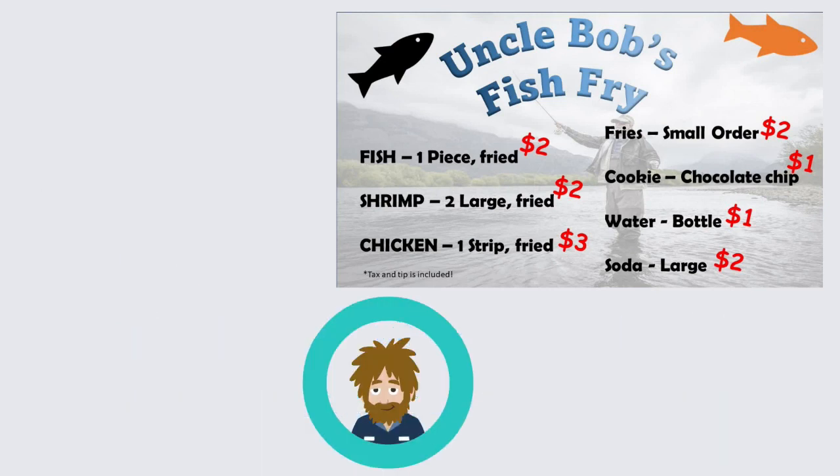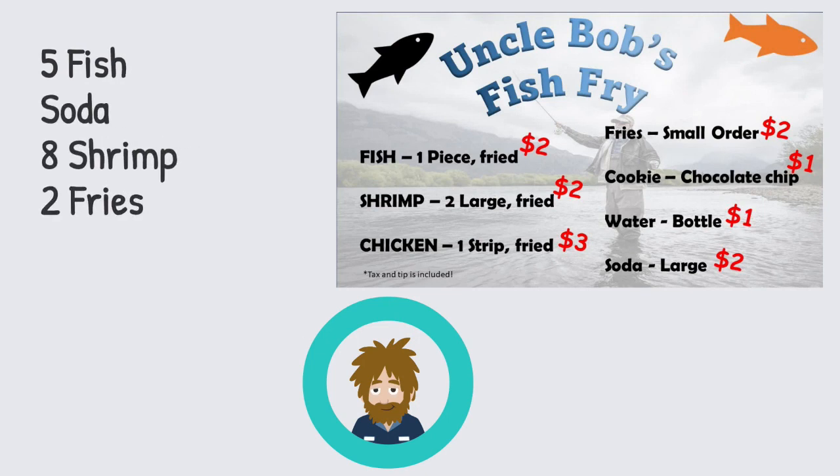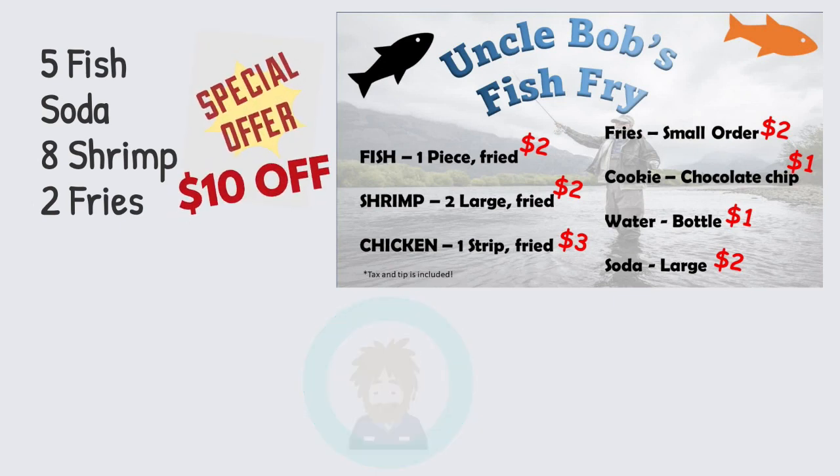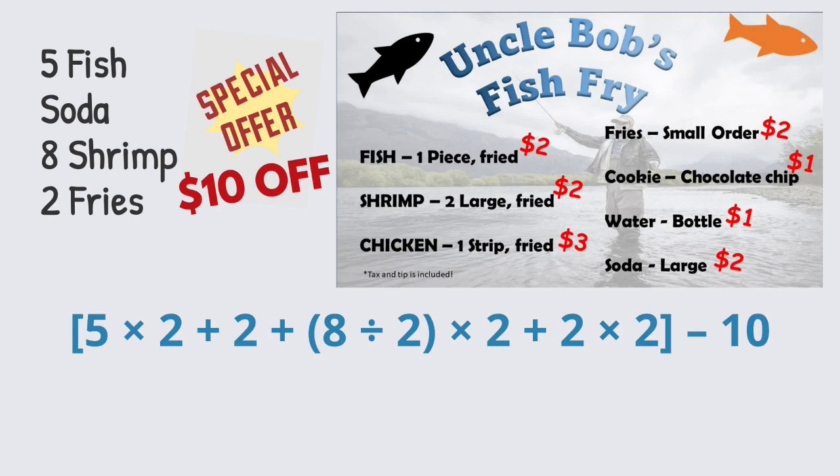Jake comes by and orders 5 pieces of fish, a large soda, 8 shrimp, and 2 orders of fries. He has a coupon for $10 off his order. What is Jake's total if the following expression represents his order?